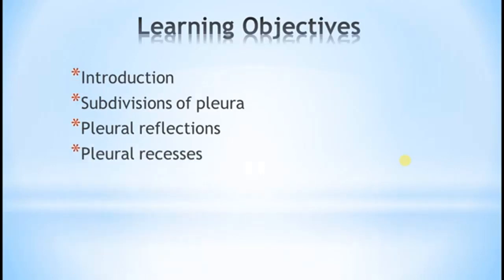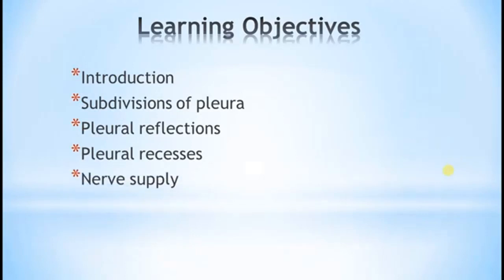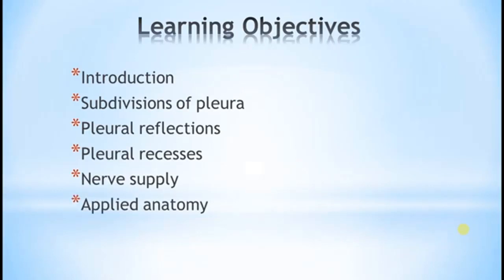Then we are going to discuss, very importantly, certain spaces which are present within the pleura, called the pleural recesses. Followed by that, we are going to touch upon the nerve supply and the blood supply of the pleura, and finally we will conclude this session by discussing the applied anatomy.